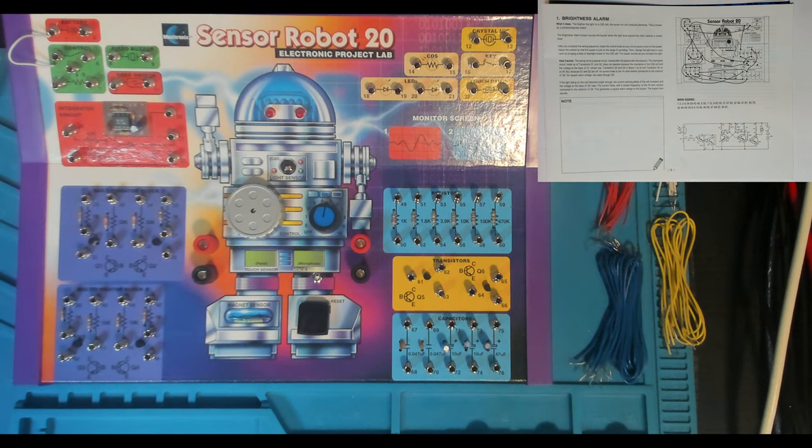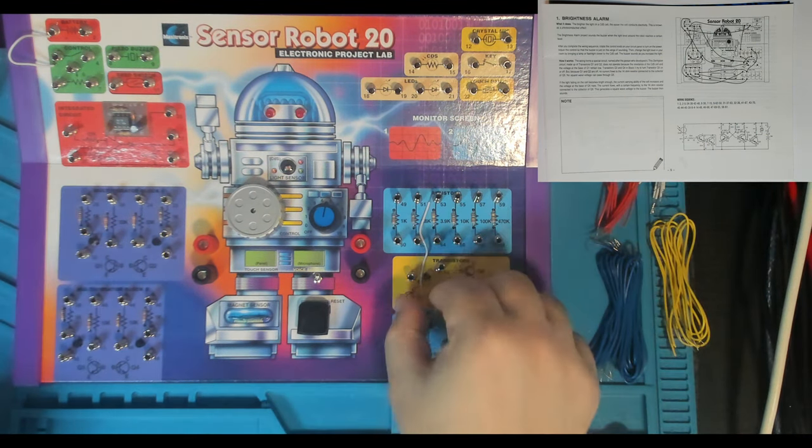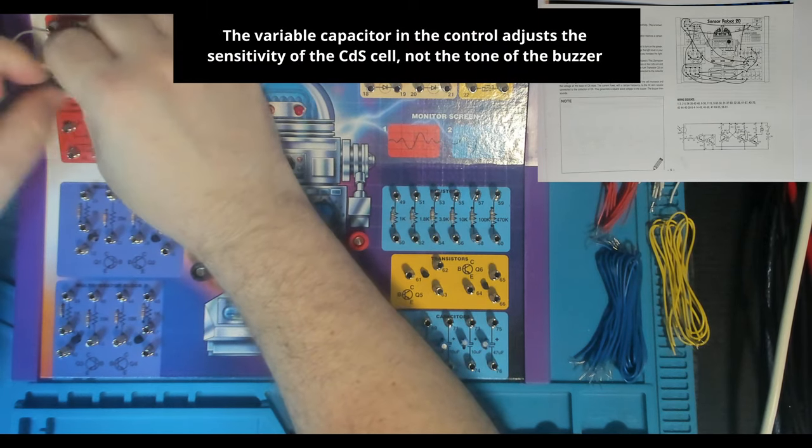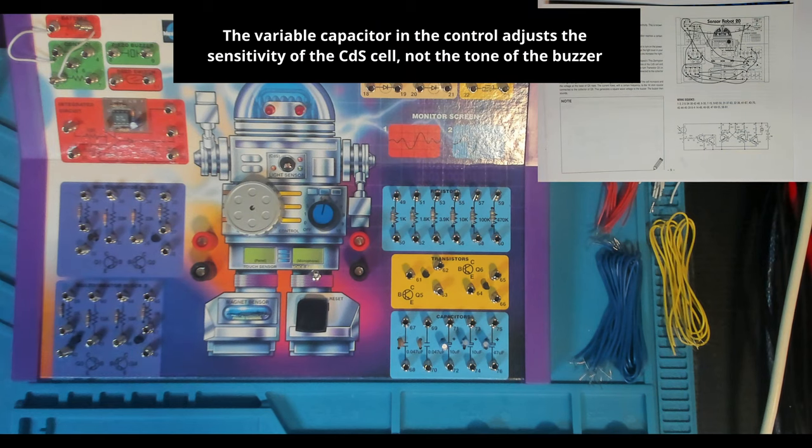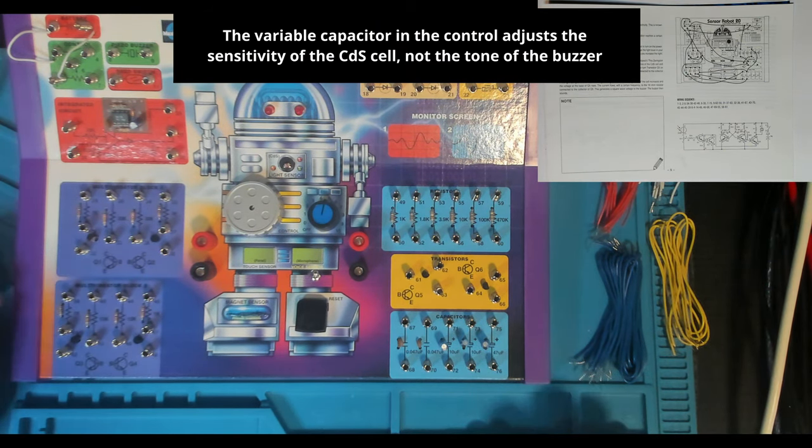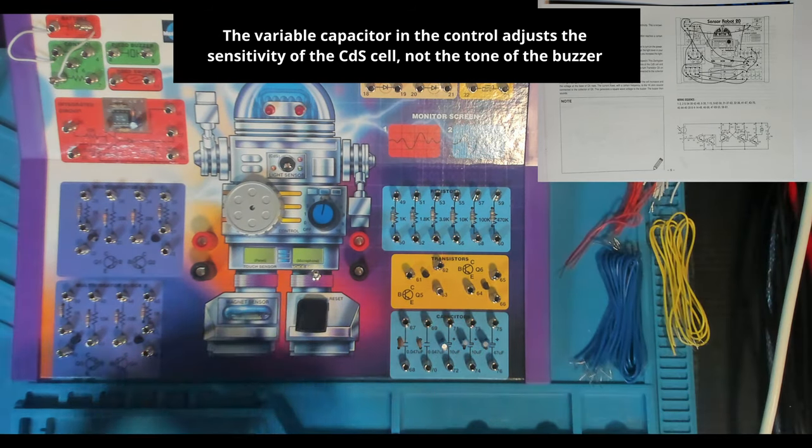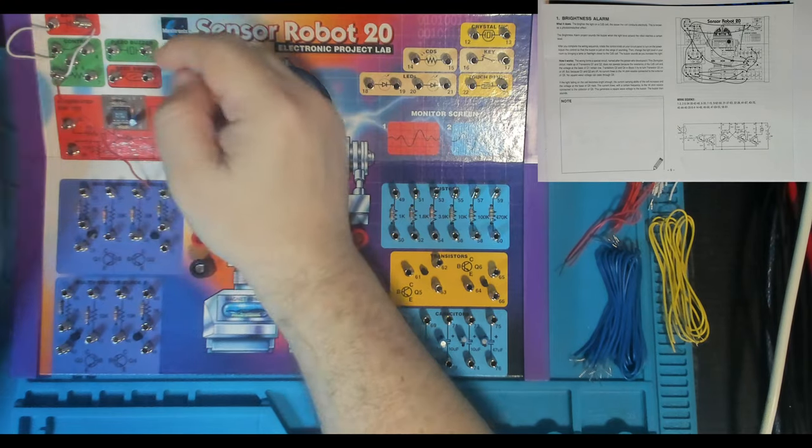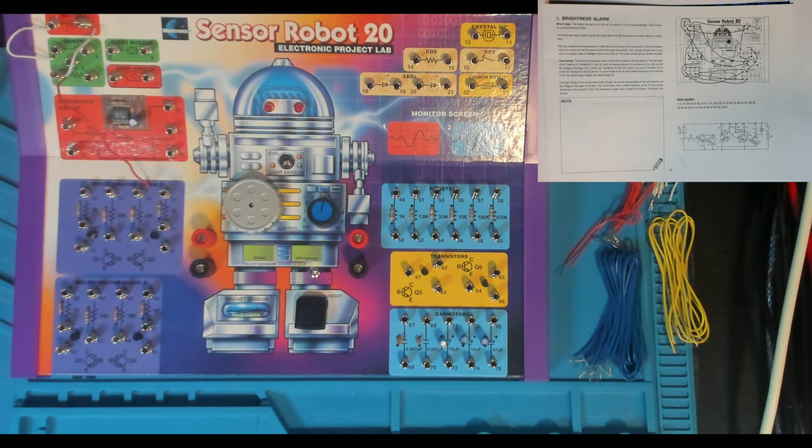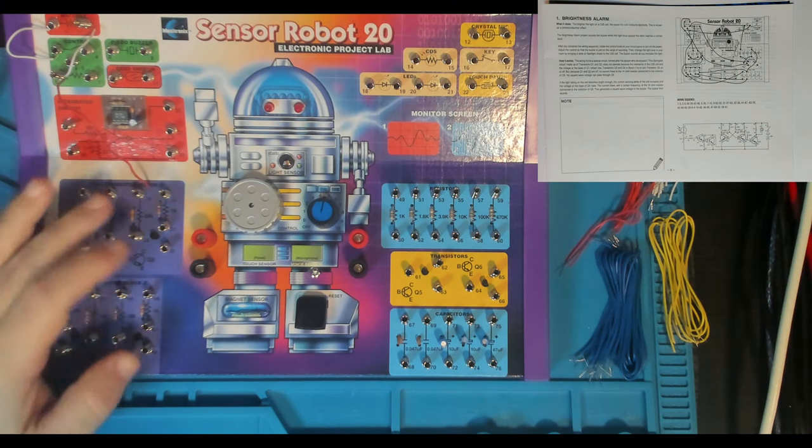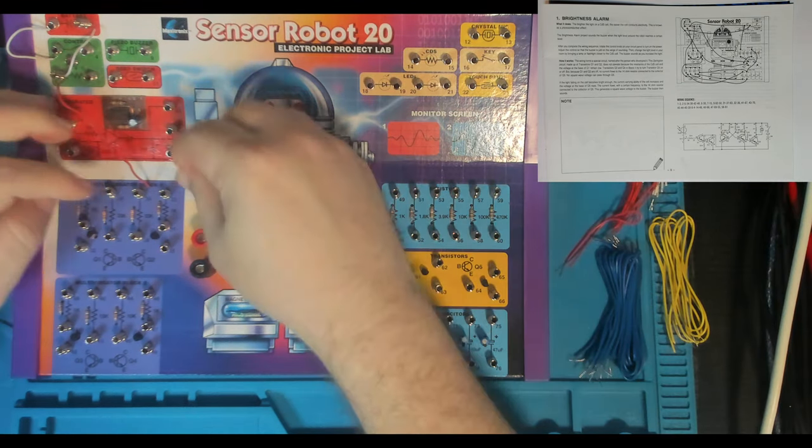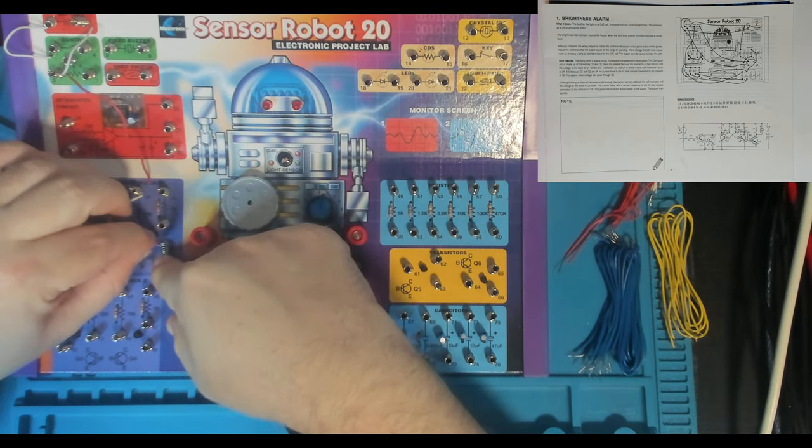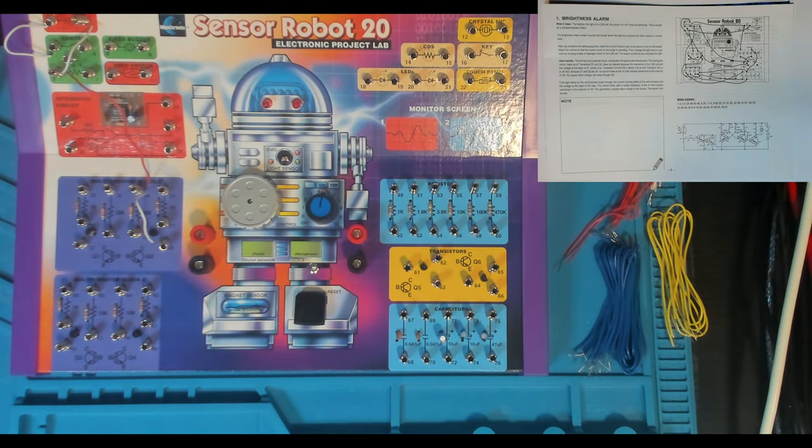Now we're going to go two to five. That's the negative power over to the variable resistor, which will control the tune of the oscillator. Then five to 34. 34 is one of our resistors, a 33K resistor. Still getting the hang of these new wires. They're a bit different to the ones from the previous kit. Then 34 to 38, coming into the emitter of this NPN transistor.